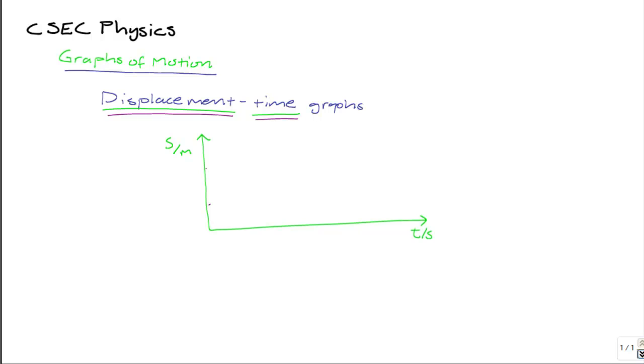If instead of being horizontal with respect to your x-axis, the line representing your graph is sloping, in other words it's at an angle or it slopes with respect to the x-axis, then it indicates that S, your displacement, is changing with time. In other words, the object is moving.